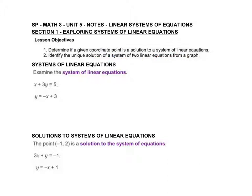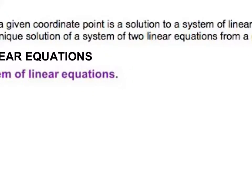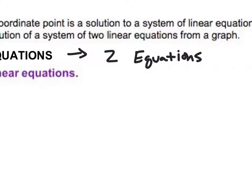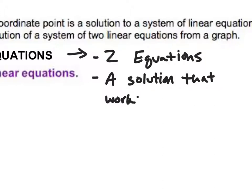Let's talk about what a system of linear equations is. A system of linear equations is two equations — sometimes you can have more than two, but for our purposes we're just going to be talking about two equations. That's what a system is: you have two equations, and you're looking for a solution that works for both equations.